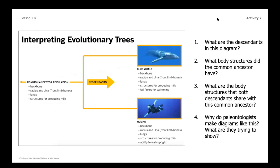We're going to go back to the diagram from our 1.3 reading and take a closer look now that we know those two terms — descendants and common ancestor populations. There are four questions I want you to dig into from this text feature. Pause the video and work through those questions, then we'll briefly go over the answers.